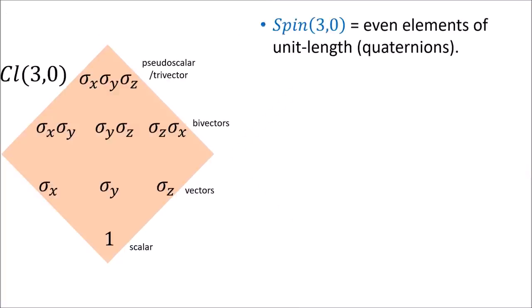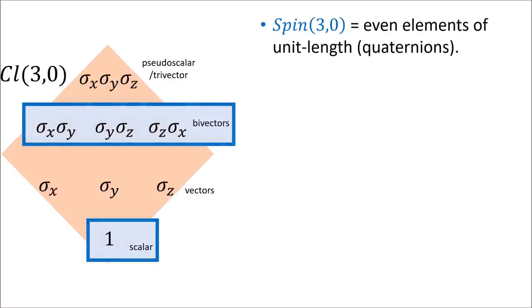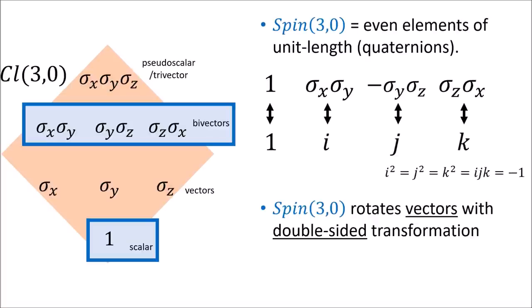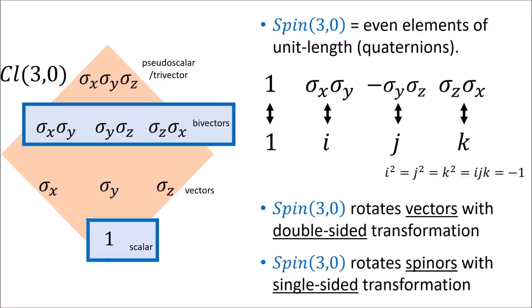I show how every Clifford algebra contains something called a spin group which is the even members of unit length. In the Clifford algebra for 3D space the spin group is just the quaternions. The spin group rotates vectors using a double-sided transformation but it transforms spinors using a single-sided transformation.